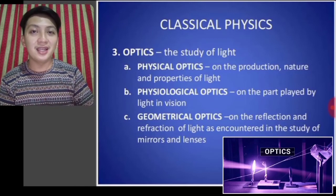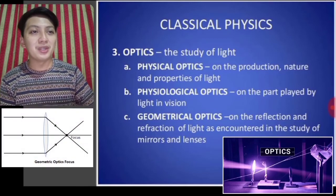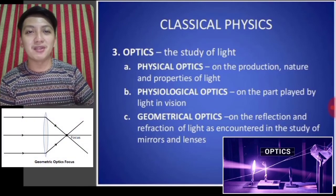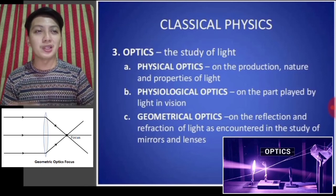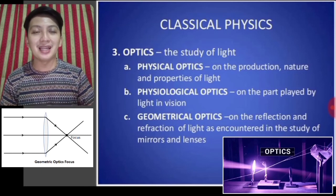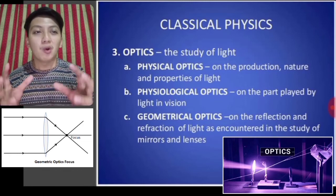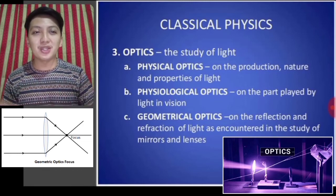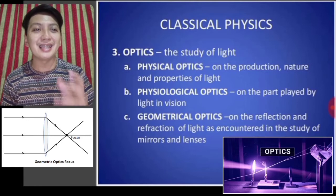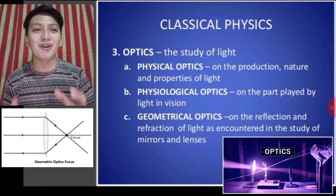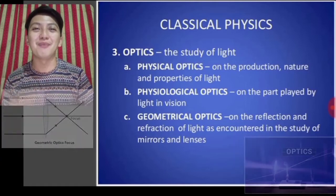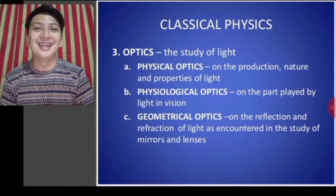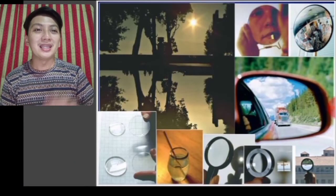The third branch under classical physics is optics — the study of light. Physical optics covers the production, nature, and properties of light; physiological optics covers the part played by light in vision; and geometrical optics covers the reflection and refraction of light as encountered in the study of mirrors and lenses. Those are the three subdivisions of optics.